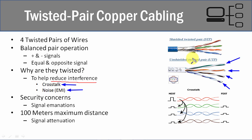The twists also help prevent crosstalk, which is a type of EMI where the signal goes from one cable to the next. For example, a signal on the orange strand can jump down to all the other cables, causing signal degradation.